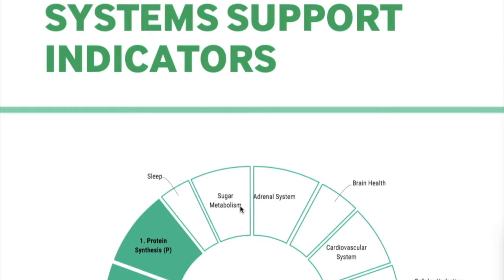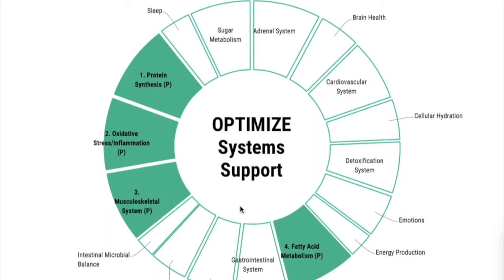Page four shows your system support indicator, which gives an overall picture of the test. Some wording can be confusing if you're not a professional or nutritionist. In my case: oxidative stress, fatty acid metabolism, protein synthesis, musculoskeletal system — these are all linked to food I need to increase. What you really have to look at is the food that will help you to increase and address these indicators.